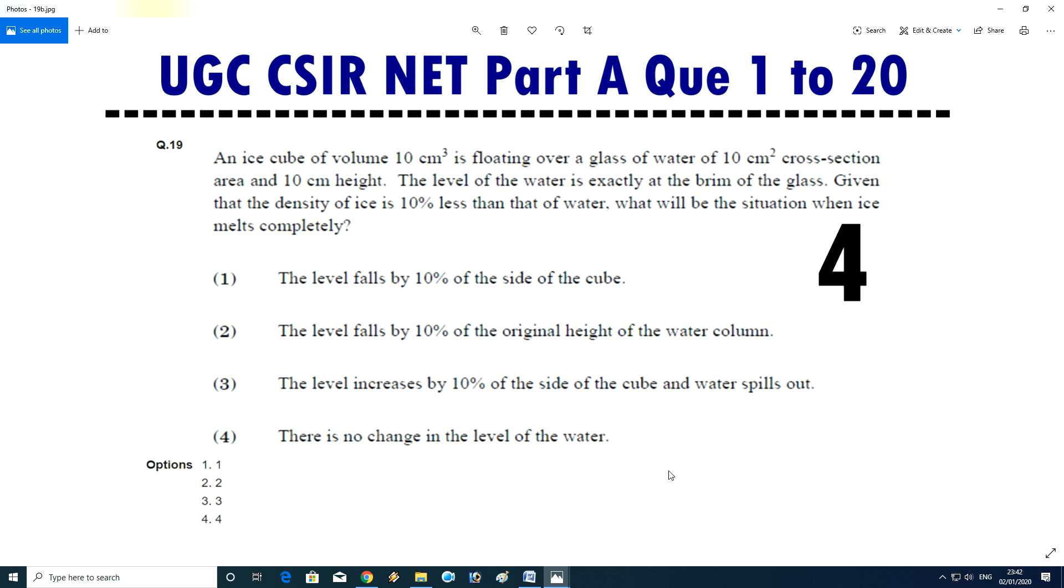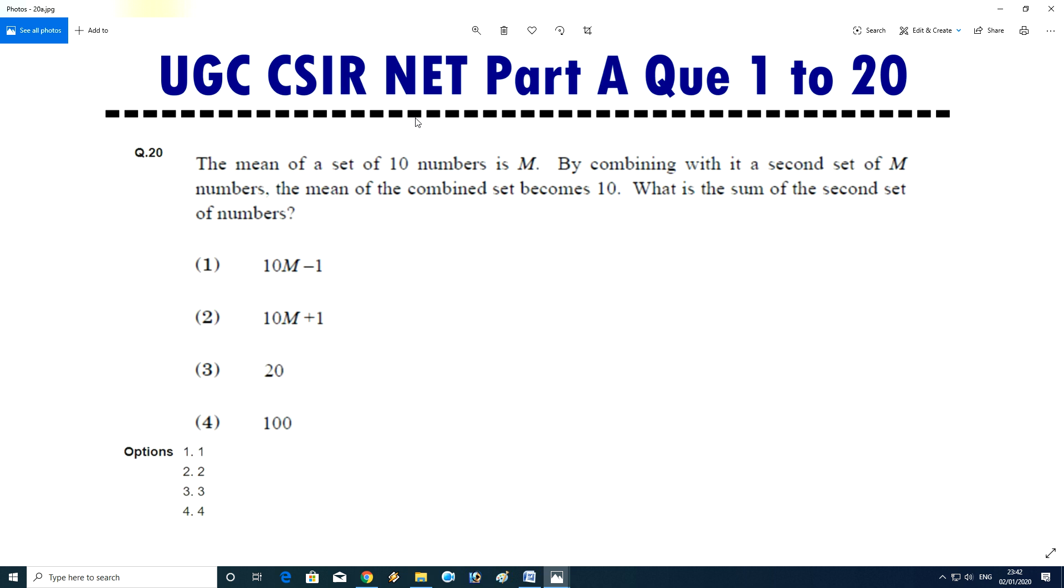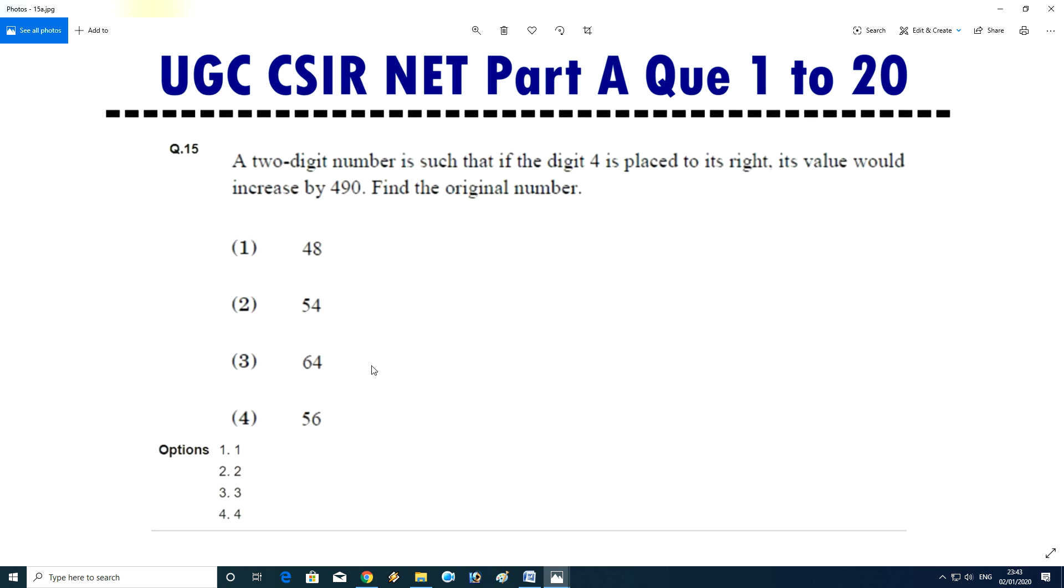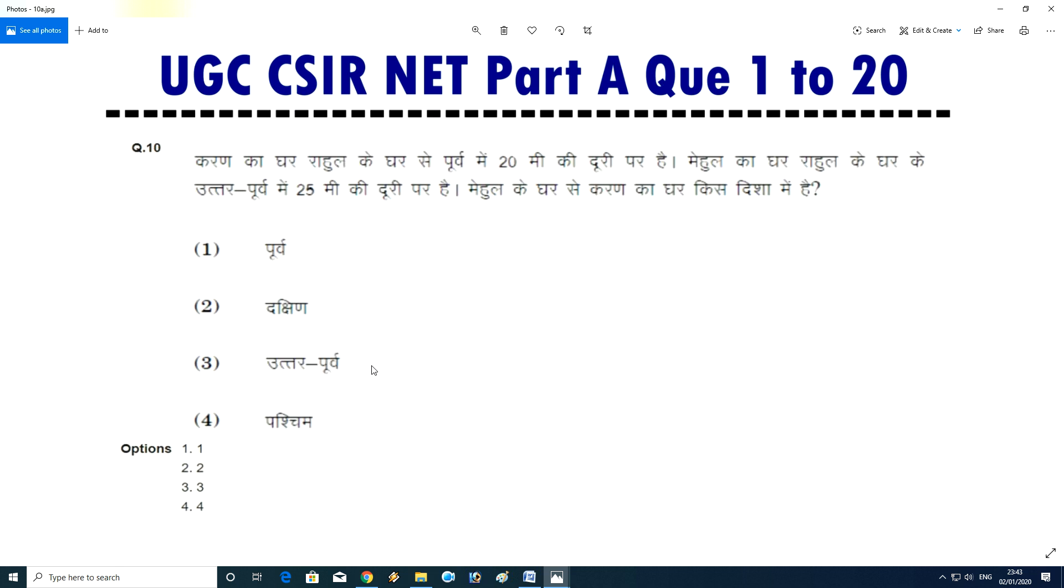Question number 20: the mean of a set of 10 numbers is M. By combining with a second set of M numbers, the mean of the combined set becomes 10. What is the sum of the second set of numbers? This is fully related to statistics, answer is D, means fourth, it's 100.